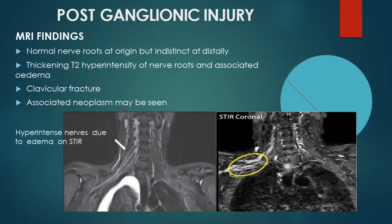Coming to postganglionic injury — this is injury beyond the dorsal nerve root ganglion. On MRI, the nerve roots appear normal at their origin but are indistinct distally. The terminal nerves appear T2 hyperintense with thickening and edema. As indirect evidence, clavicular fracture may be seen, and sometimes neoplastic etiology such as a Pancoast tumor may cause postganglionic brachial plexopathy. The T2 STIR coronal section here shows hyperintensity and edema in the terminal nerves, consistent with a postganglionic type of injury.